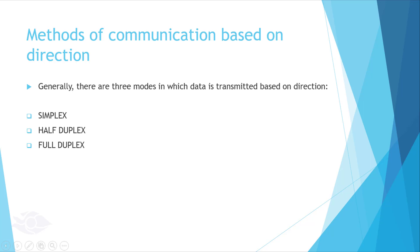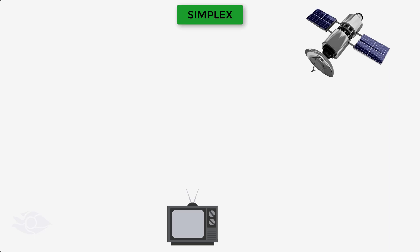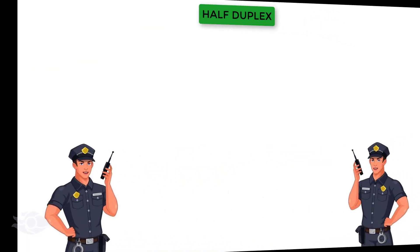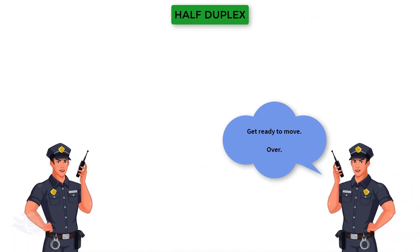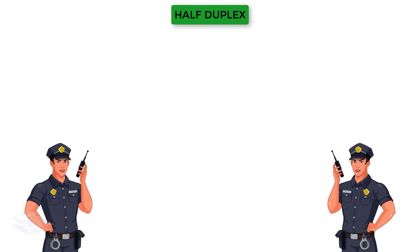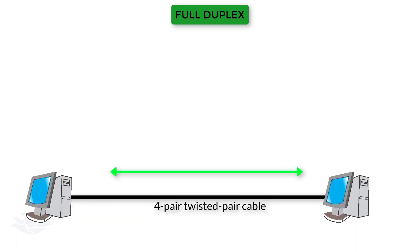Generally, there are three modes in which data is transmitted based on direction. These are simplex, half-duplex, and full-duplex transmission. In simplex communication, transmission can only occur in one direction and not the other. In half-duplex, transmission can occur in both directions but only one direction at a time. In full-duplex, transmission can occur in both directions at the same time.